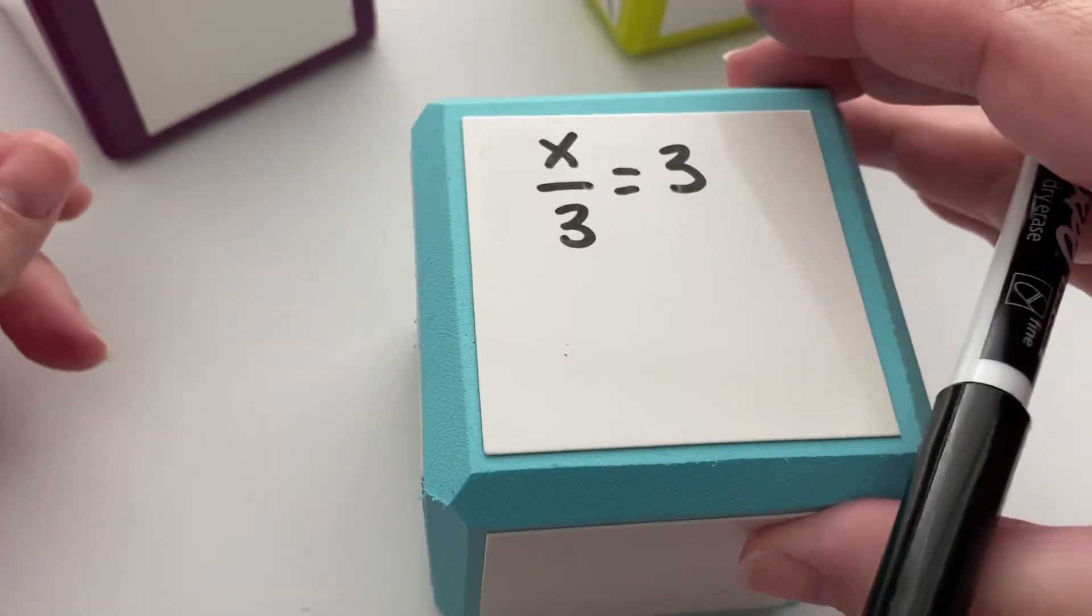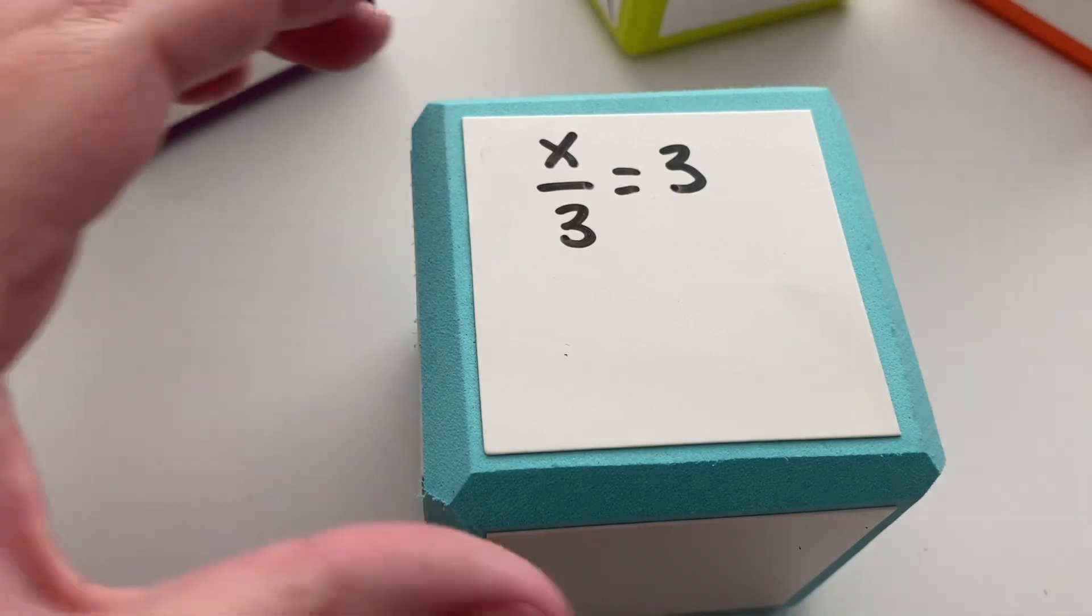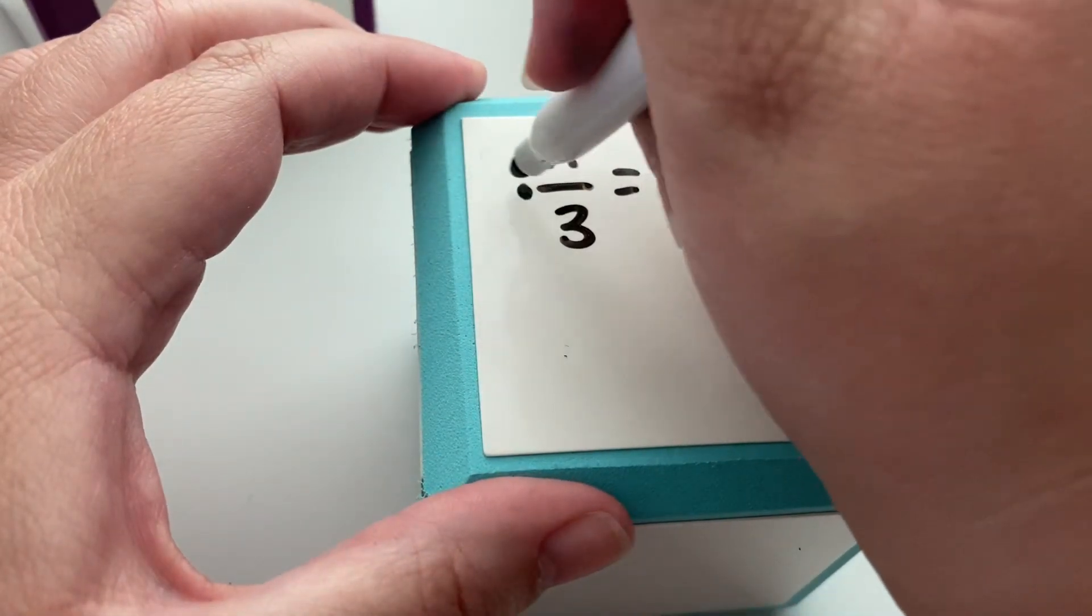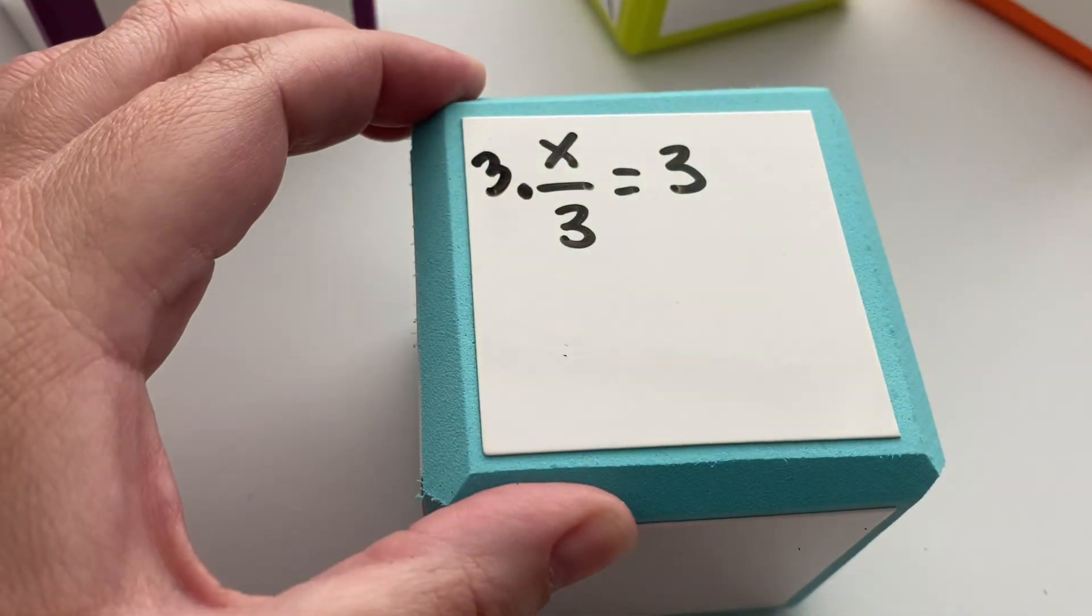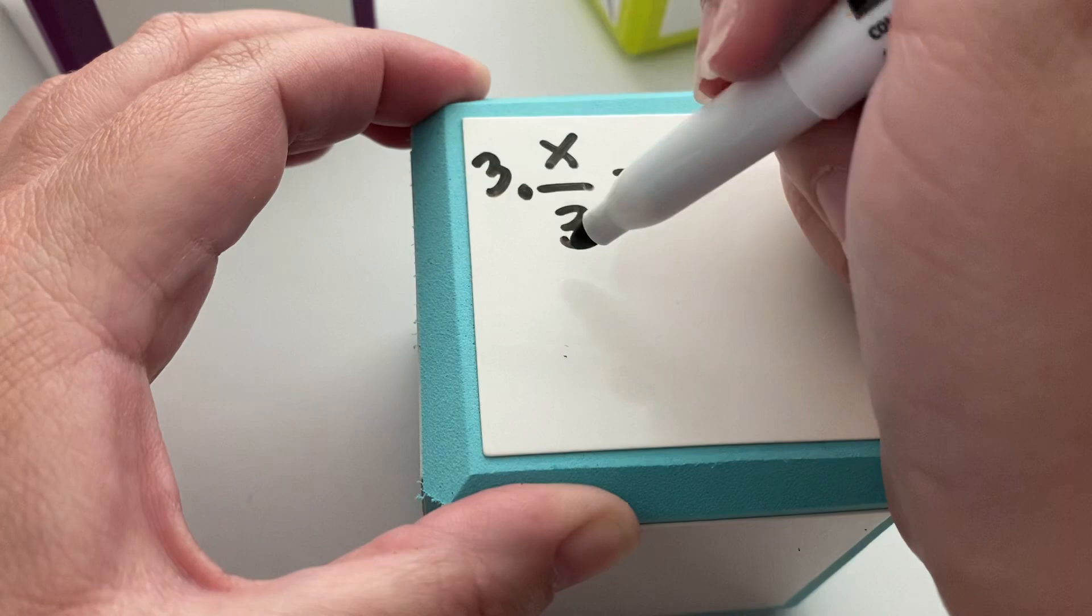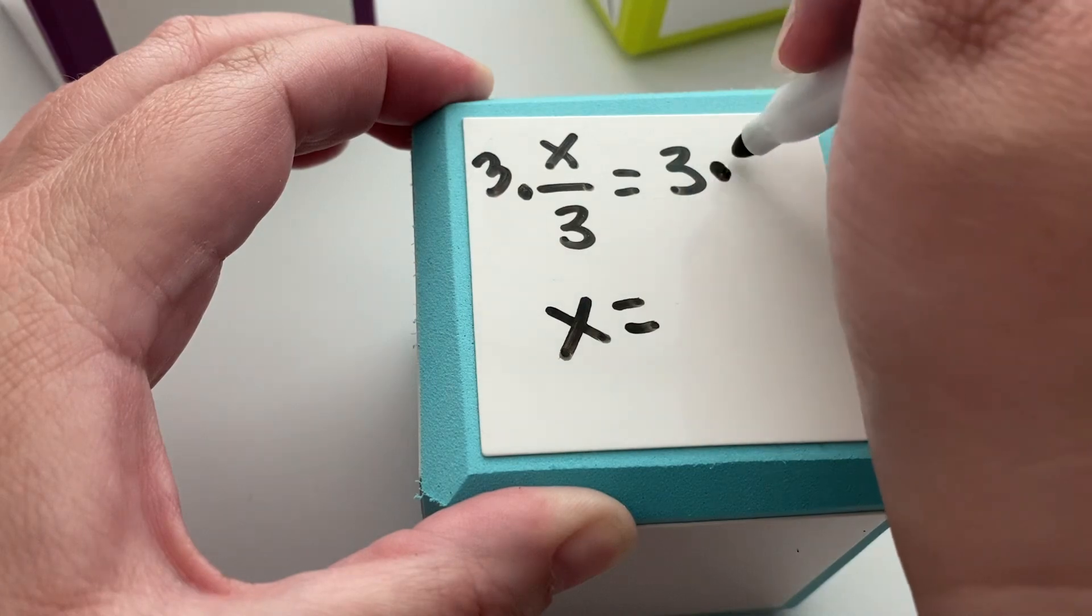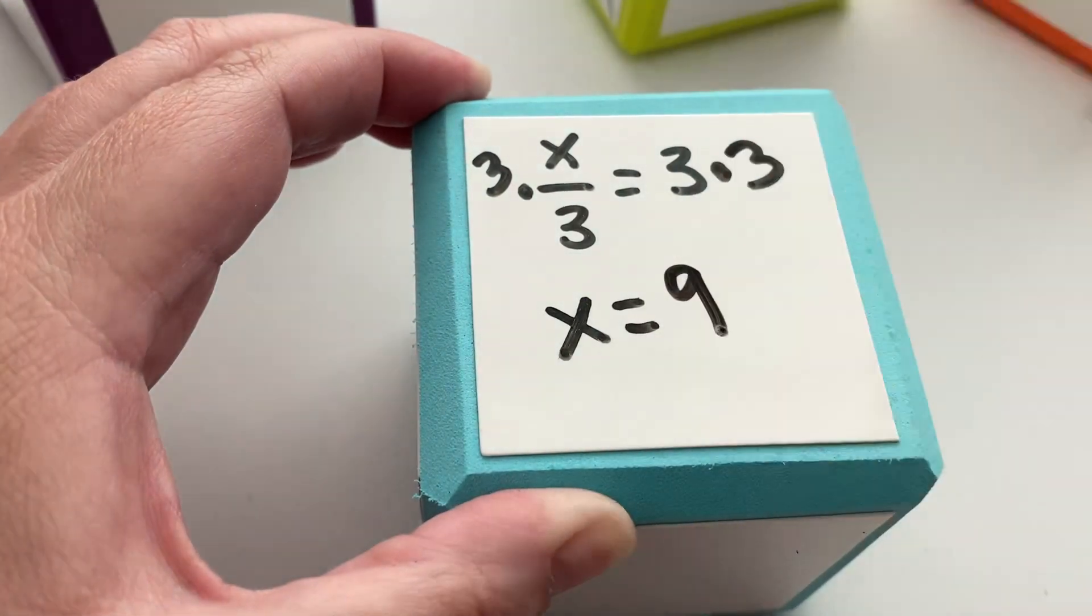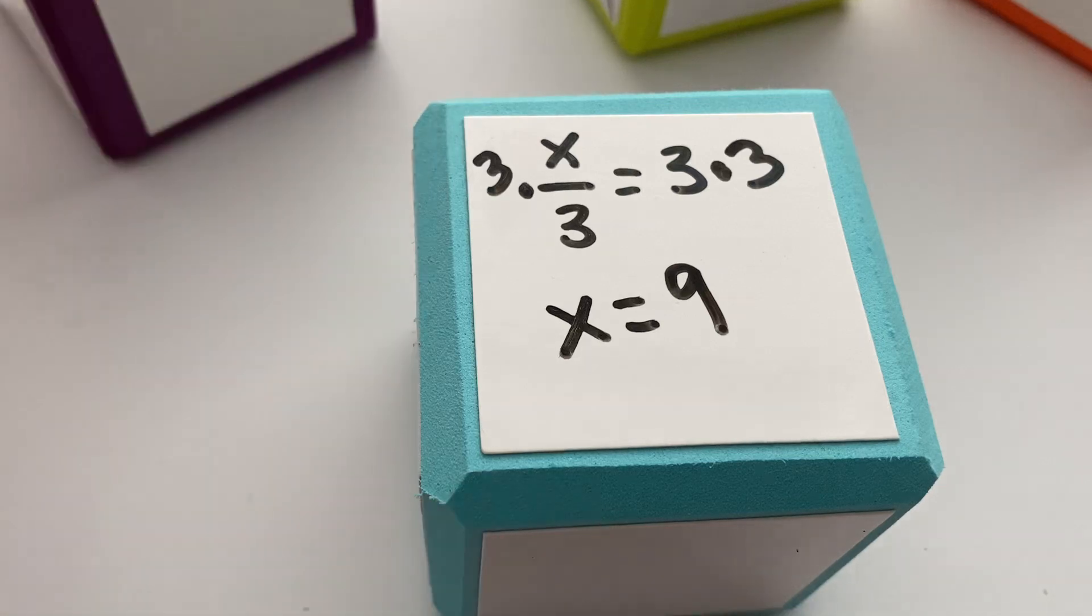Let's look at another one. When it looks like a fraction like this, it says x divided by three, so we're going to multiply. When we do that, we get three divided by three. Even though we're multiplying, we have a fraction of one, leaving us with x on this side. We multiply by three on this side: three times three is nine. X equals nine.